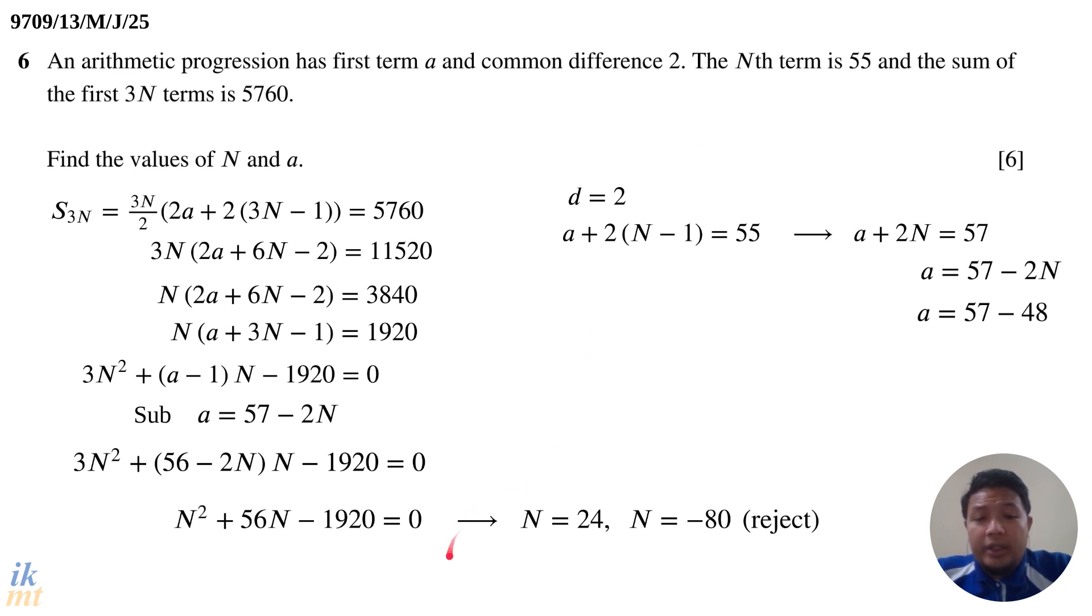Now we should look at what N represents here. N represents sort of like the nth term. Basically, N has to be a counting number. It has to be a positive integer. So out of these two, only 24 is a positive integer and negative 80 is a negative integer. So we will reject this solution. Our only possible answer for N is 24. Then we will use this and substitute into 57 minus 2N and we'll get 57 minus 48. After that, we'll get a to be equals to 9. So a equals 9 and N equals 24. We have found the values of N and a. Mission accomplished.